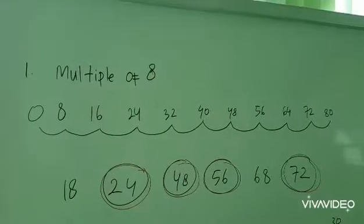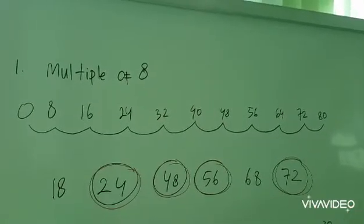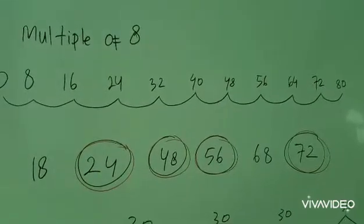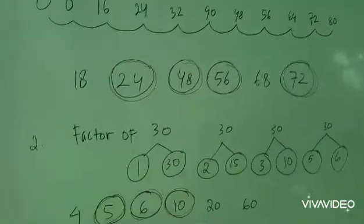This is the answer of number 1. Multiple of 8. First you can search the multiples of 8, and then after that you circle the answer. So the answer is 24, 48, 56, and 72.